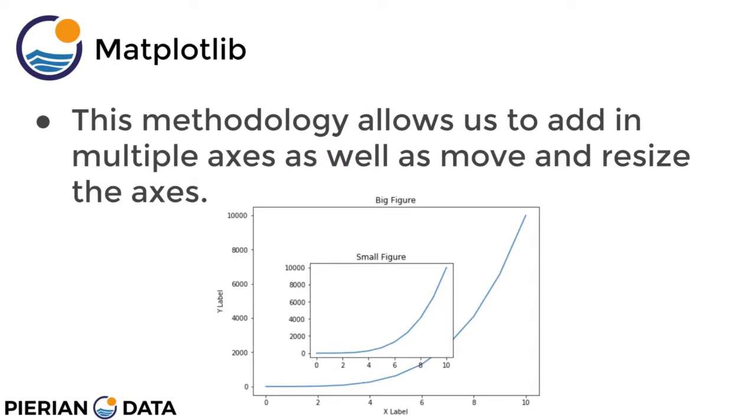So what this allows us to do is to add in multiple axes, as well as move and resize these set of axes objects, which means you could have a small figure right on top of a big figure. Now this isn't actually a realistic example, but you can have something like an inset plot on top of a larger plot, or you can make two set of axes be right next to each other.